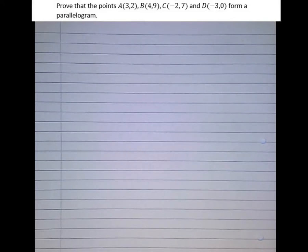So let's get straight into the question. It says prove that the points A(3,2), B(4,9), C(-2,7), and D(-3,0) form a parallelogram.